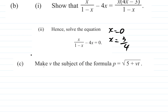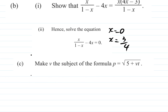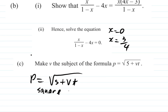Now, remember when you say 'make V the subject of the formula,' you should have V equals — and then no more V's. V alone equals something, with nothing mixed up with the V, and then you have everything else on the other side. So you have P equals the square root of S plus VT. You square both sides of the equation — P squared equals the square root of (S plus VT), squared.